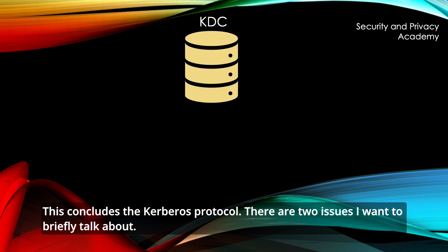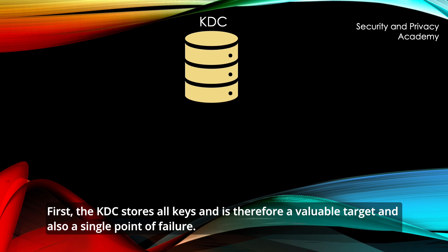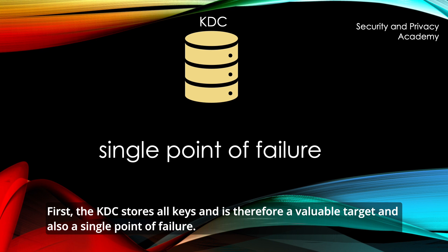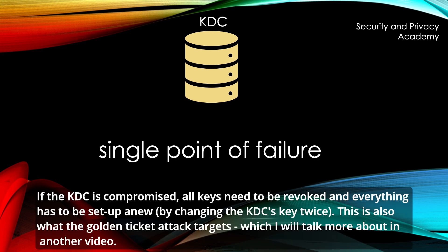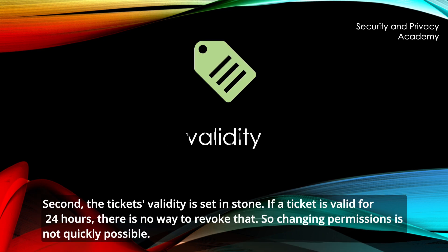This concludes the Kerberos protocol. There are two issues I want to briefly talk about. First, the KDC stores all keys and is therefore a valuable target and also a single point of failure. If the KDC is compromised, all keys need to be revoked and everything has to be set up anew by changing the KDC's key twice. This is also what the golden ticket attack targets, which I will talk about in another video. Second, the ticket's validity is set in stone. If a ticket is valid for 24 hours, there is no way to revoke that, so changing permissions is not quickly possible.